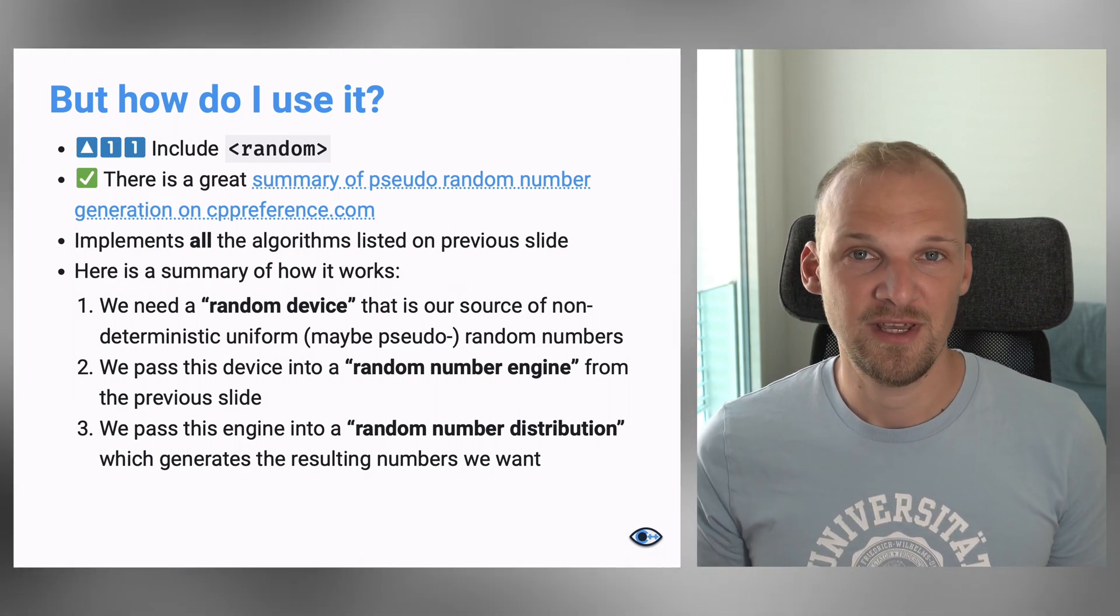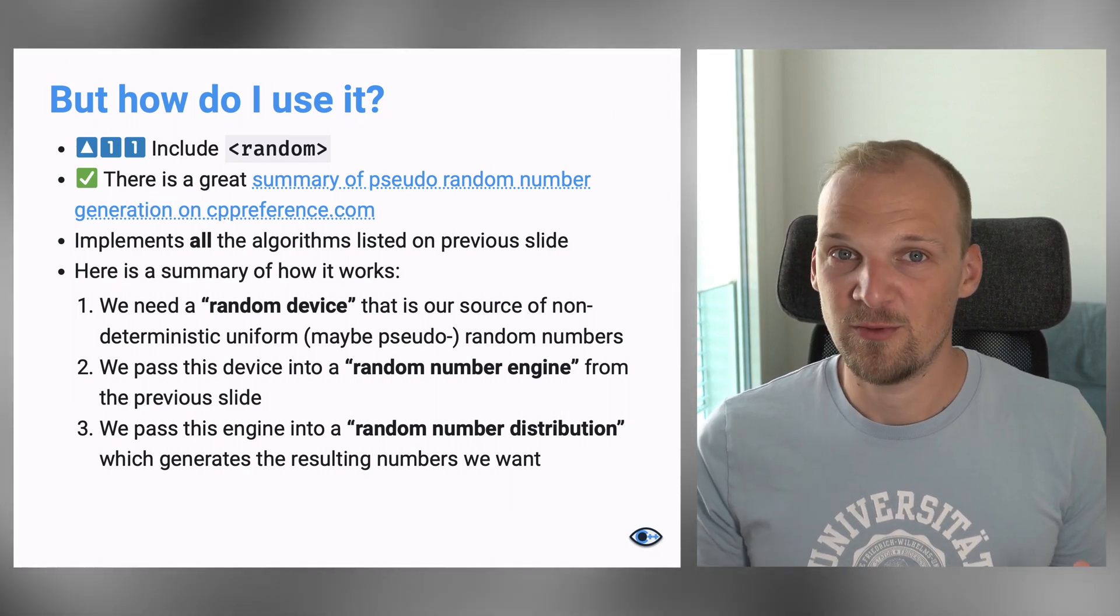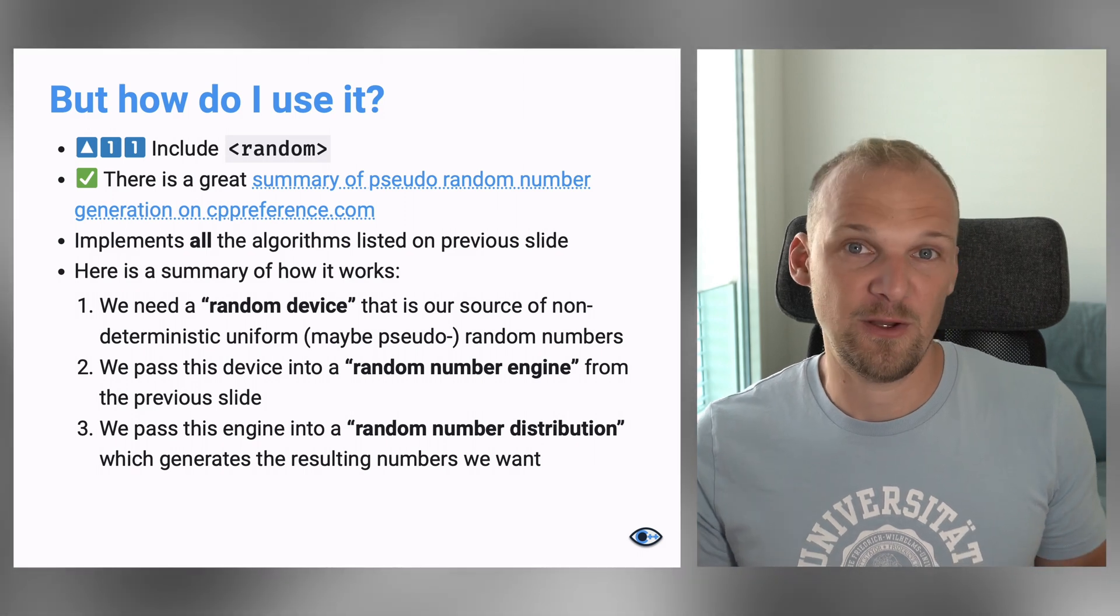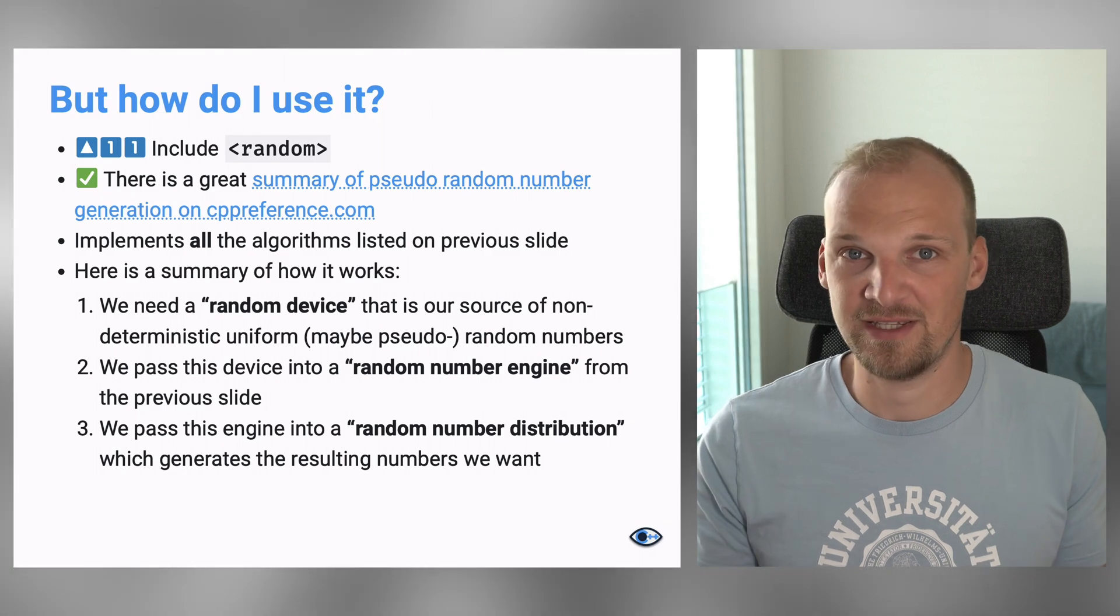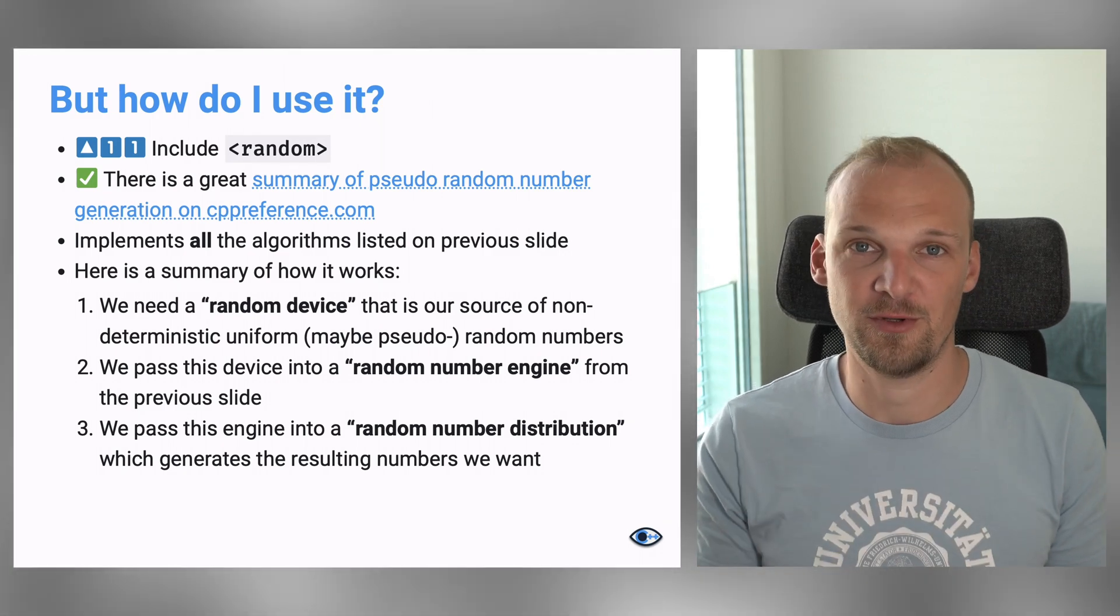So, for example, if you want a random number which is uniformly distributed between, say, 1 and 10, you can create a uniform integer distribution and you will get an integer from 1 to 10 uniformly distributed.